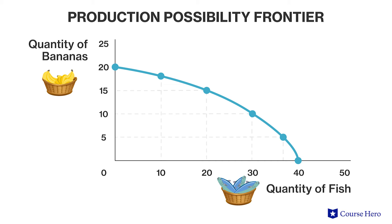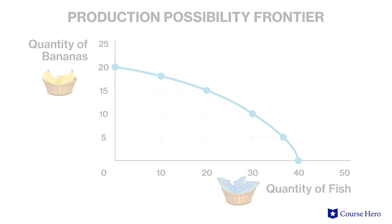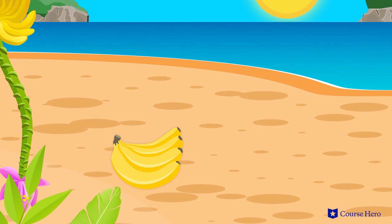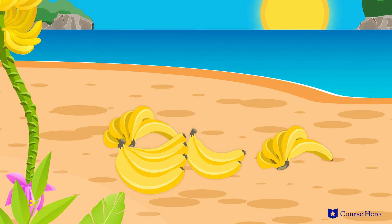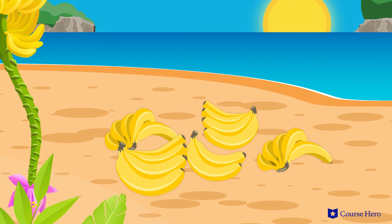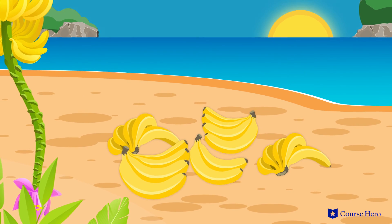Even with increasing opportunity costs, Jerry's maximum number of fish caught and his maximum number of bananas gathered are still the same, because the endpoints of Jerry's production possibility frontier are determined by his available resources and technology, which remain the same. Jerry can never gather more than 20 bananas in a given time period, no matter how many fish he catches, because he doesn't have the time to do that.